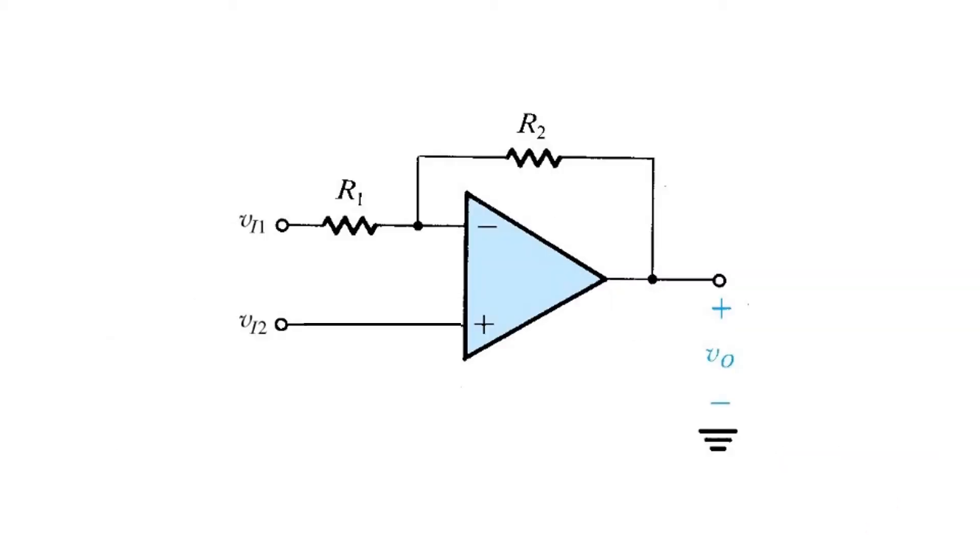So, how can we make a difference amplifier out of an op-amp? Well, here's one attempt at doing so, and we'll see it's not a very good attempt, but it'll lead us in the right direction. We can analyze this circuit very easily by superposition. First, let's consider what happens when VI1 is equal to zero. In that case, we will have a simple non-inverting configuration.